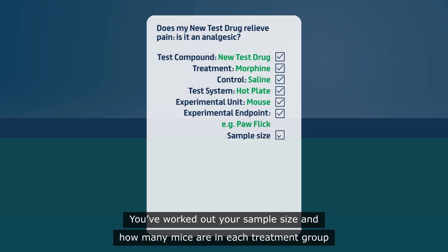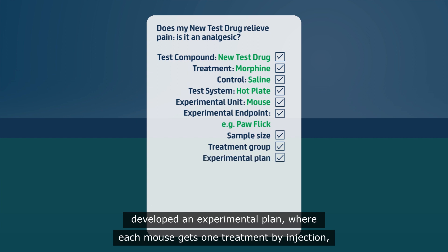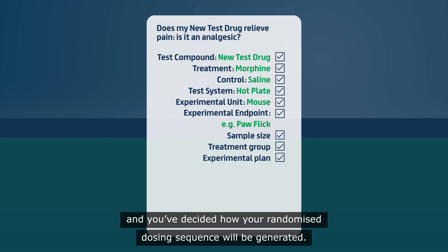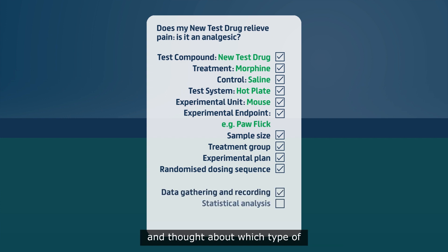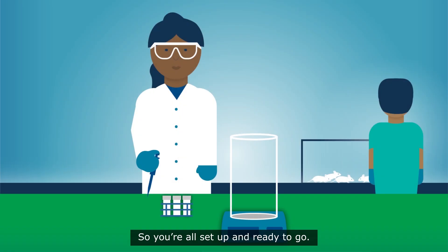You've worked out your sample size and how many mice are in each treatment group, developed an experimental plan where each mouse gets one treatment by injection, and you've decided how your randomised dosing sequence will be generated. You've also decided how you'll gather your data and thought about which type of statistical analysis is the correct one to use. So you're all set up and ready to go.